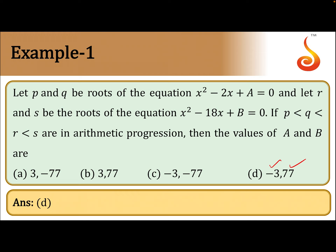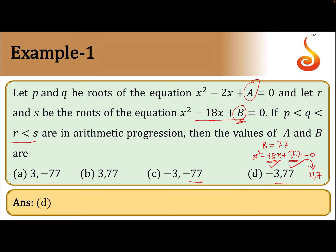You can also use a shortcut technique to simplify the problem by observation. Since r and s are roots of the second equation, b must be greater than a, so b should be either -77 or 77. If b = 77, the equation becomes x² - 18x + 77 = 0, and the roots 11 and 7 sum to 18 — this works. If a = 3, then x² - 2x + 3 = 0 cannot have real roots, so that option is eliminated. Therefore the answer is a = -3 and b = 77.